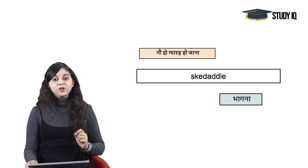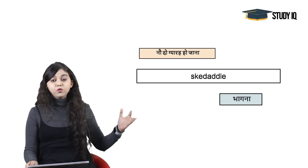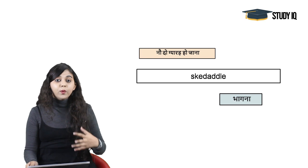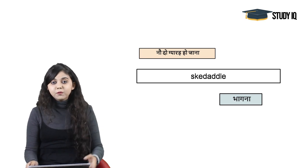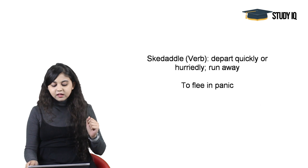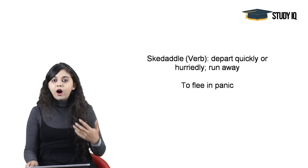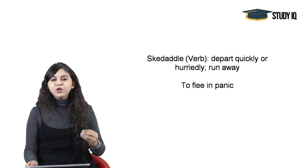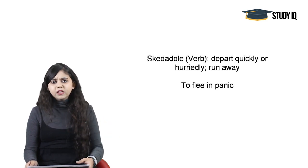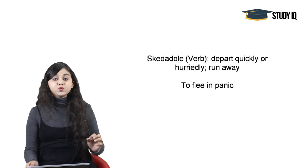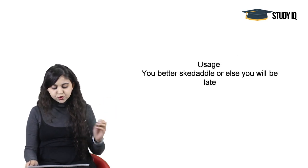Moving on to the next word: Skedaddle. Skedaddle ka arth hota hai naudo gyaara ho jaana, bhaag jaana — when you run away. Skedaddle means to depart quickly or hurriedly. When you are running away, to flee in panic — jab panic mein bhaag jaate hain — that is when we use the verb skedaddle.